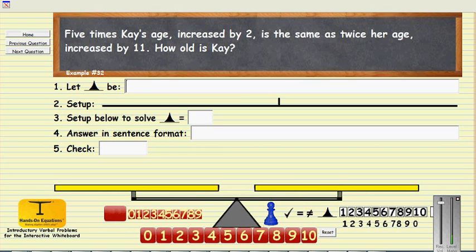So let pawn be k's age. Five times k's age would be represented by five shaded triangles. We're now doing the setup.